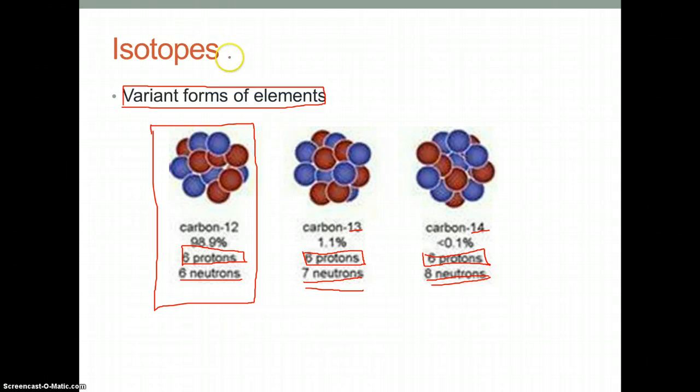So isotopes are variant forms of elements formed by the change in neutrons.